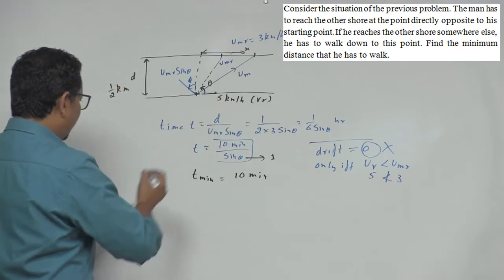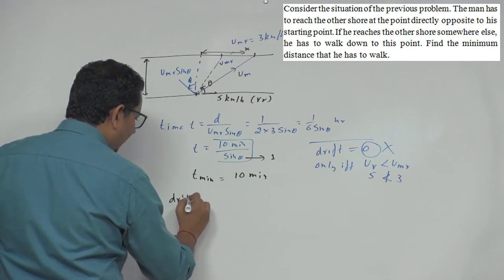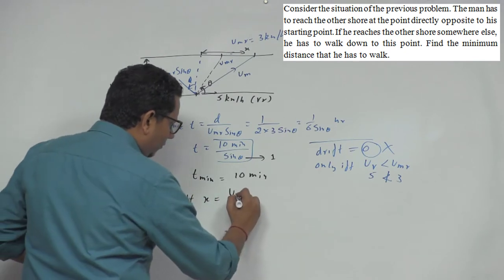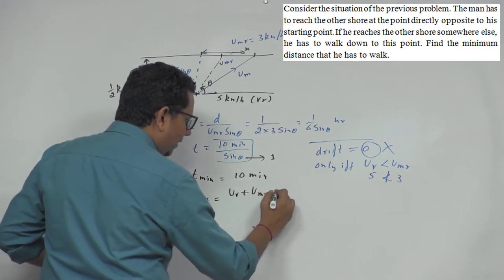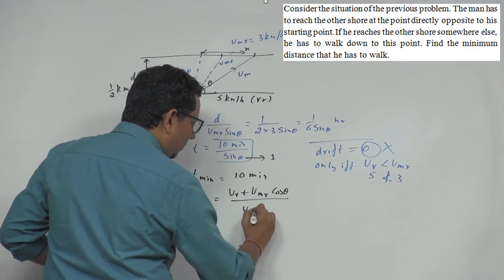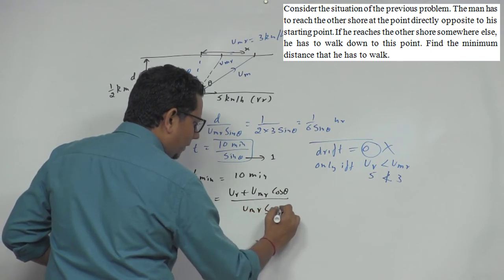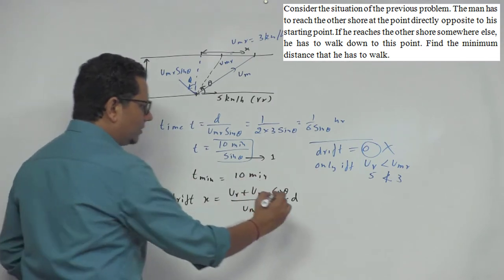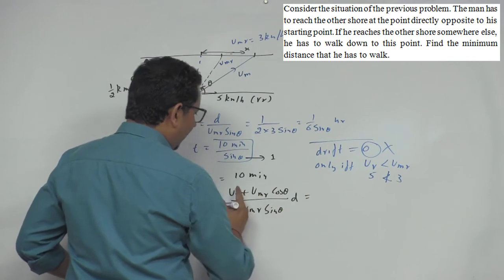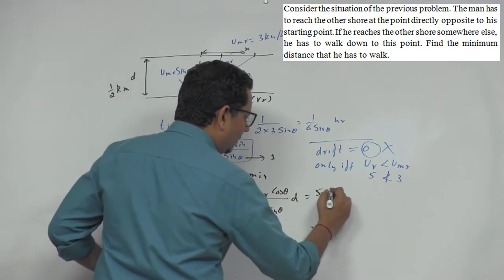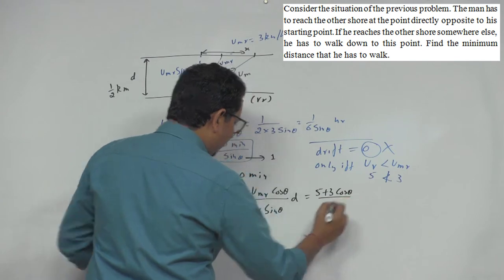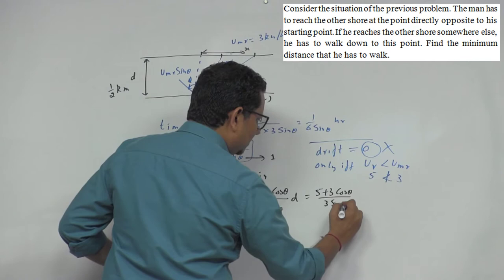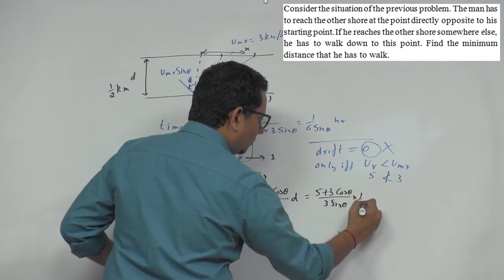Now if we use the drift formula, we write drift x as: VR plus VMR cos theta divided by VMR sin theta multiplied by d/2. This will equal 5 plus 3 cos theta divided by 3 sin theta multiplied by 1/2.